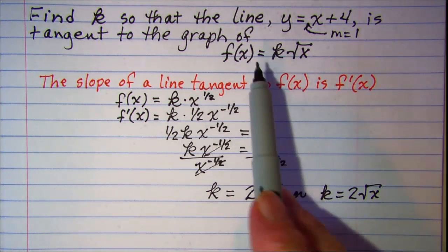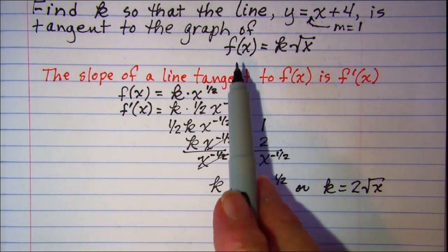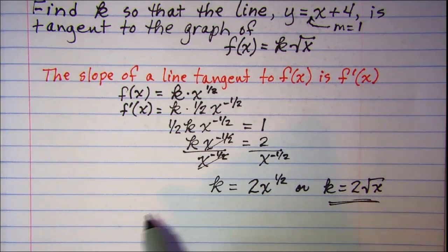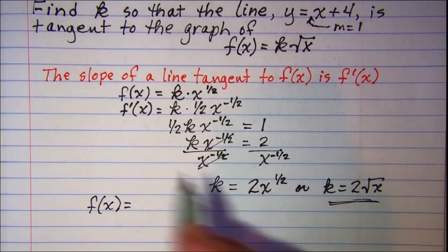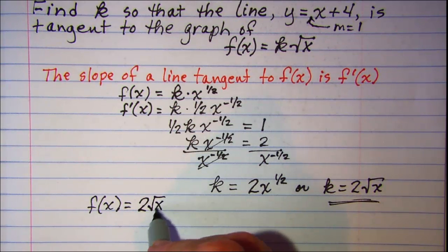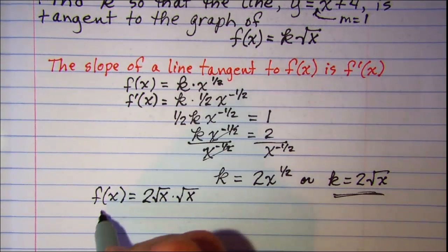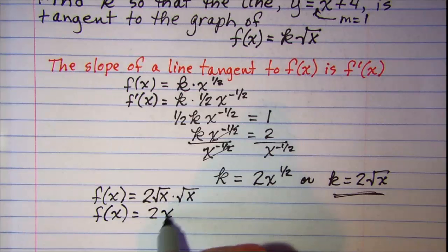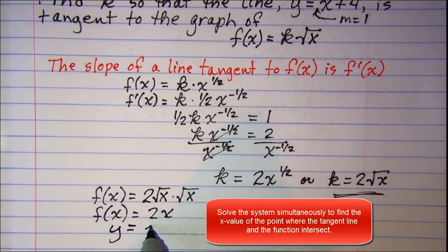Now our function was f of x equals k root of x. So let's rewrite our function now with this k value substituted in. So f of x now is equal to two root of x times root of x. This simplifies to two times x. So this is my function and my line is y equals x plus four.